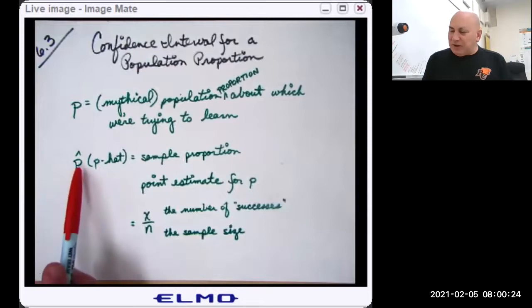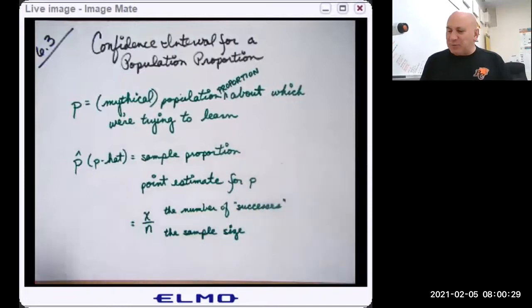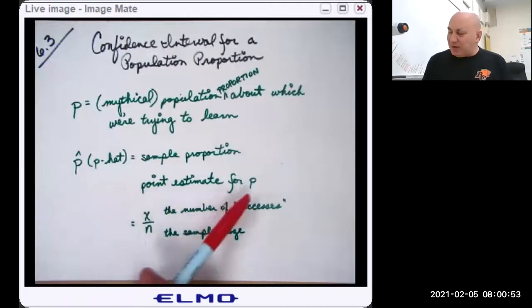Then this we call P hat. That's actually its name. And that's our sample proportion. Now you might remember when we had a sample mean we used X bar, you might think, why don't we use P bar? We won't. P bar means something else. So P hat is our sample proportion. And like X bar was a point estimate for a population mean, P hat is a point estimate for the population parameter P.